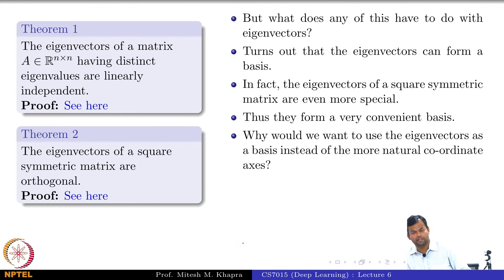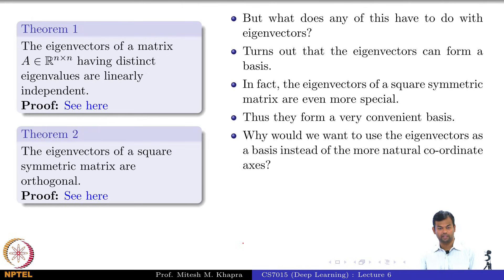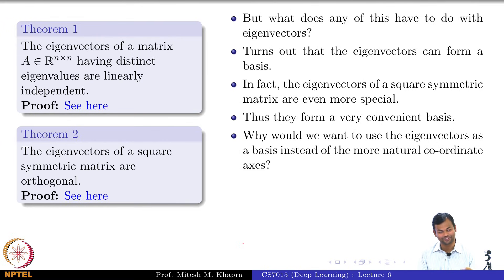Why would we want to use a different basis? We already have the coordinate axis as a very good basis — (1,0,0), (0,1,0), (0,0,1) in n dimensions. So why care about an eigenvector basis? I have said that eigenvectors form a very convenient basis, but there is something more interesting beyond just that advantage, which I will go on to discuss.